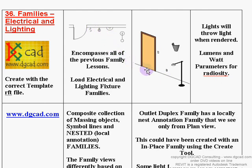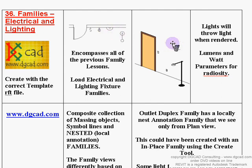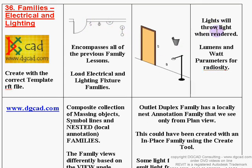The same applies to the outlet: there's a nested outlet annotation within the family. In 3D it shows the mass element, and in plan it shows the annotation symbol. The sconce light is a mass element — a revolution around a single axis going 180 degrees. Even though it would show in model view, the out-of-the-box Revit families use symbol lines to trace the mass element, so what you see in plan view is not the mass element but rather nested symbol lines.